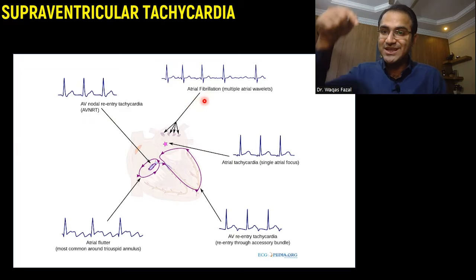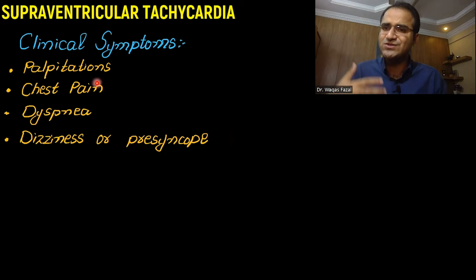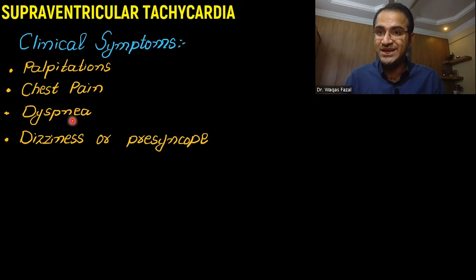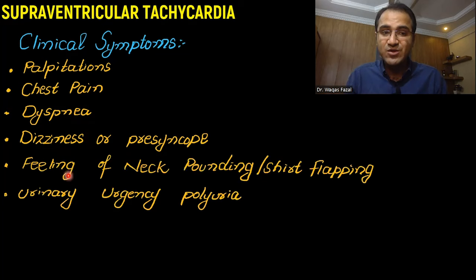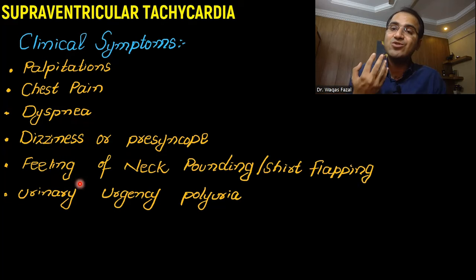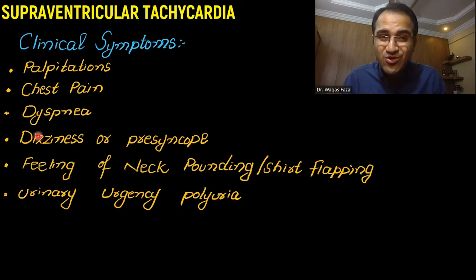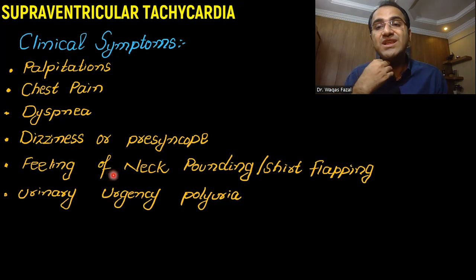A patient with supraventricular tachycardia presents with palpitations, feeling that the heart is running at a fast pace, chest pain, dizziness, and presyncope. The patient might also feel their neck is pounding and their shirt is flapping because the carotids are pushing blood to the brain at a fast rate. The patient may also complain of urinary urgency and polyuria.